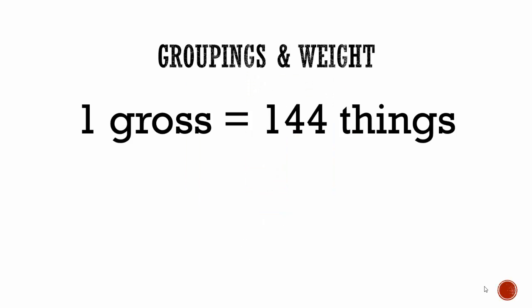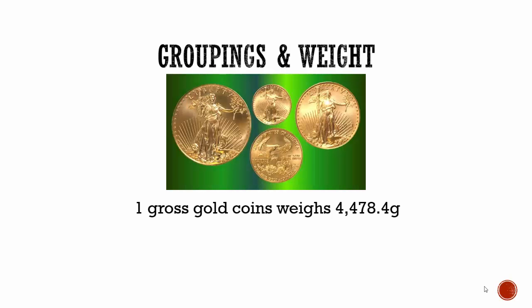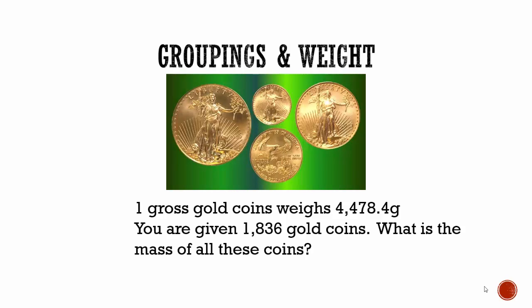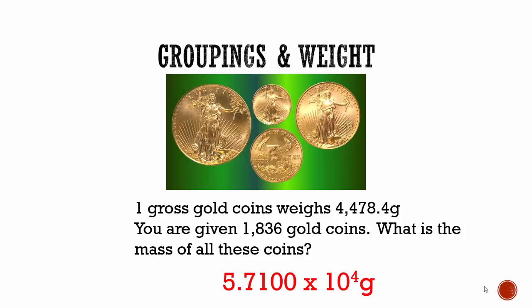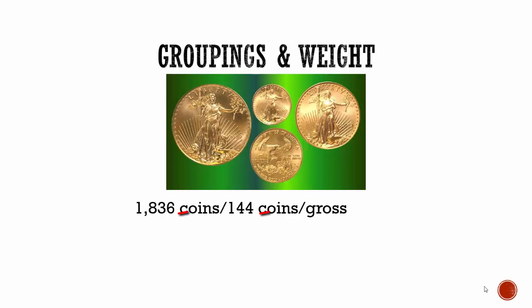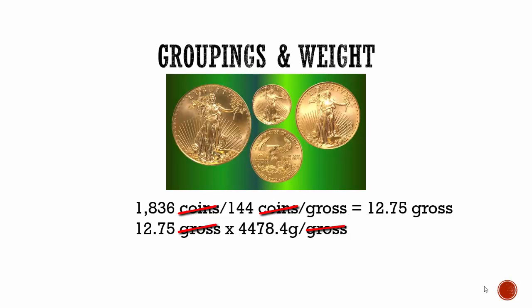Let's have you try one. We define one gross as 144 things, and one gross of gold coins weighs 4,478.4 grams. You're handed 1,836 gold coins — what's the mass of all these coins? This requires two steps. First, convert coins to gross by dividing 1,836 by 144 coins per gross, giving 12.75 gross. Then multiply by 4,478.4 grams per gross — gross cancels out — giving you 57,100 grams, or 5.7100 times 10 to the 4th grams. By the way, that many gold coins would equal $2.2 million.